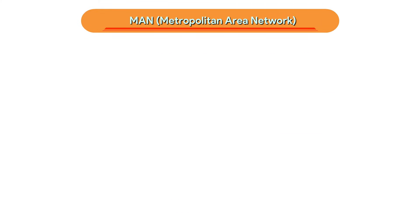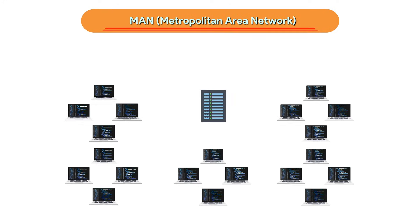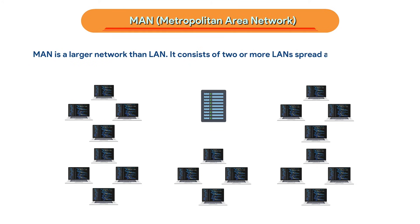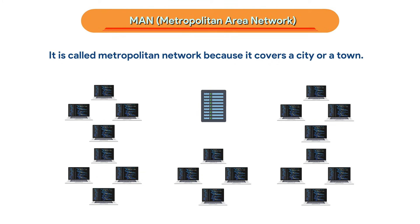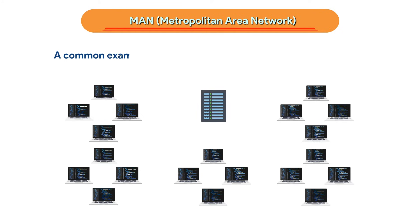MAN (Metropolitan Area Network) is a larger network than LAN. It consists of two or more LANs spread across a city. It is called a Metropolitan Network because it covers a city or a town. A common example of MAN is the Telephone Company Network.